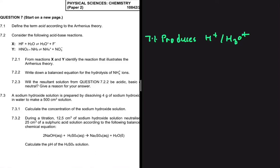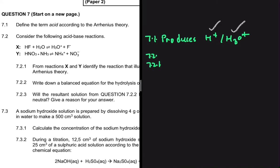If a substance produces hydrogen ions or hydronium ions according to the Arrhenius theory, it is an acid. That is the answer to 7.1. Let's look at 7.2 and 7.2.1.